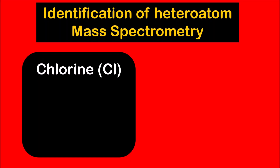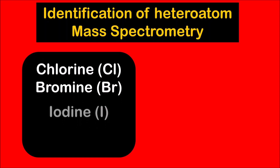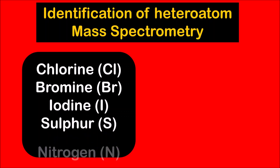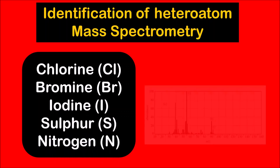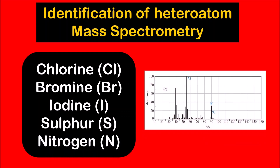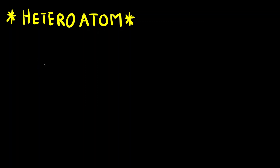The heteroatoms we are going to identify are: fluorine, bromine, iodine, sulfur, and nitrogen. This is one of the examples we are going to solve. Before understanding how to identify which heteroatom is present, you will be given an unknown compound and your task is to identify which heteroatom is present.